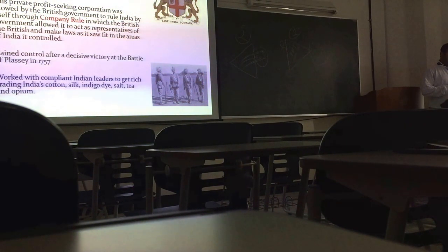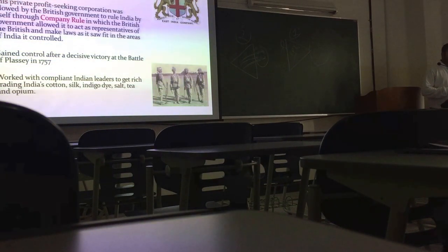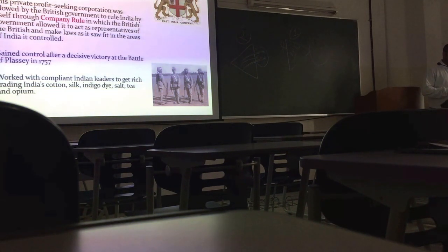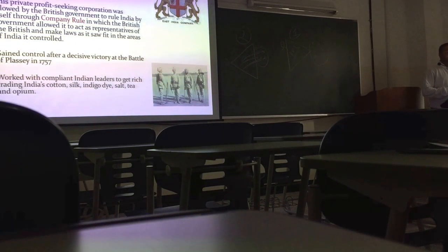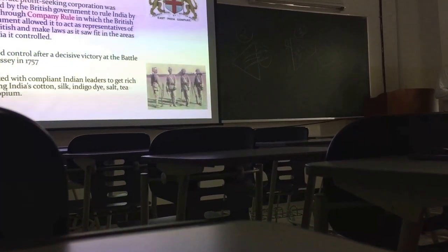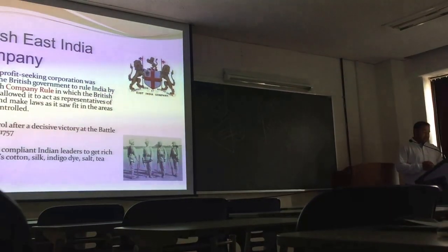British East India Company. This private profit-seeking corporation was allowed by the British government to rule India by itself through company rule, in which the British government allowed it to act as representative of the British and make laws as it saw fit in the areas of India it controlled. Gained control after a decisive victory in the Battle of Palashe — in our language it is Palashe — in 1757. They worked with compliant Indian leaders to get access to India's cotton, silk, indigo dye, salt, tea, and opium.